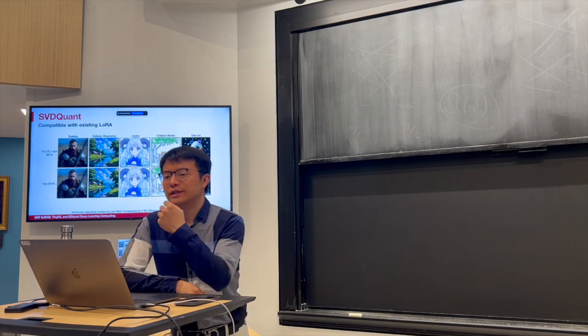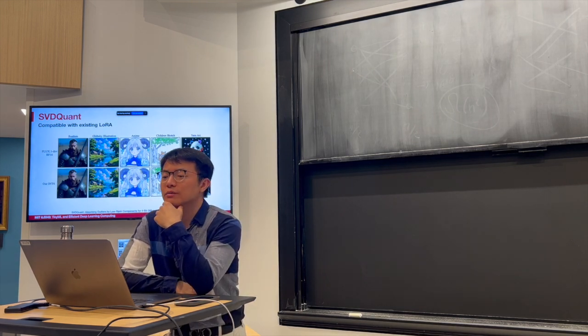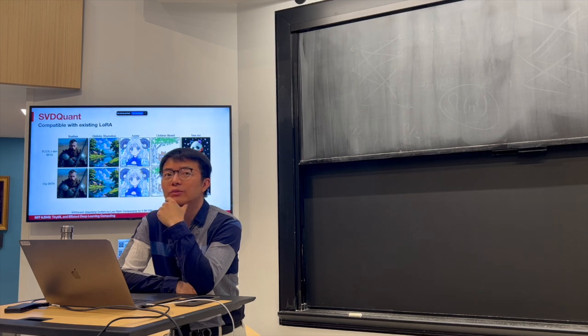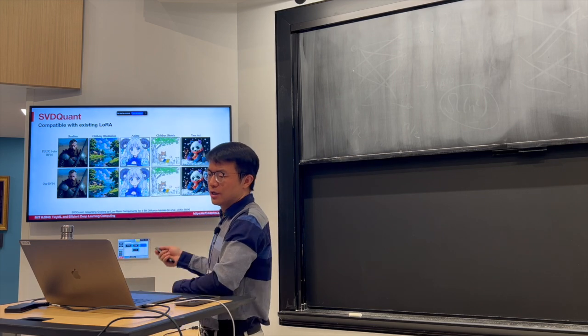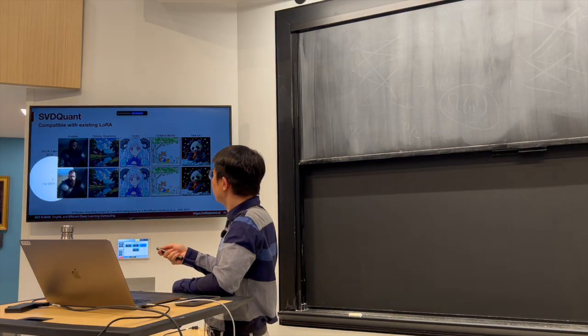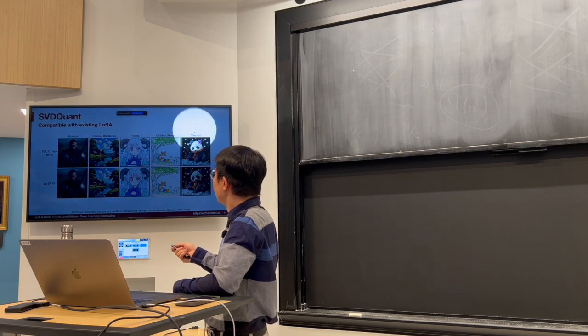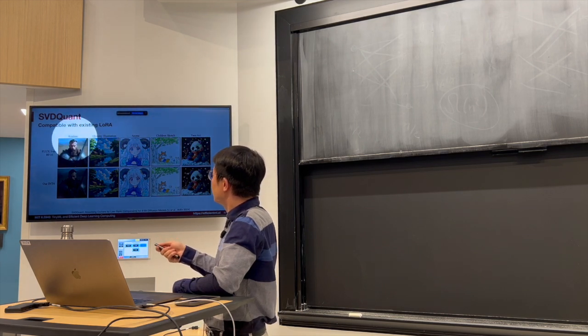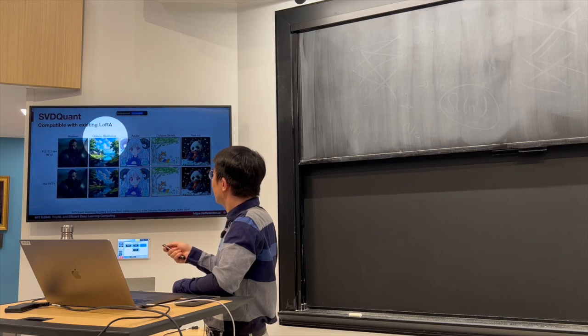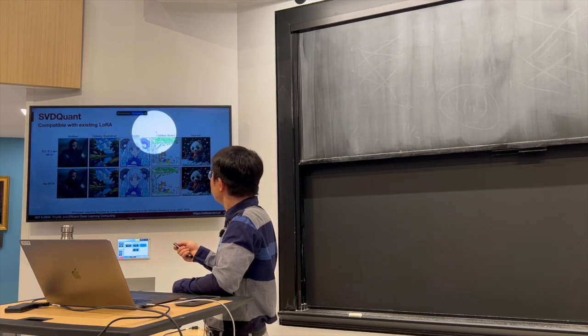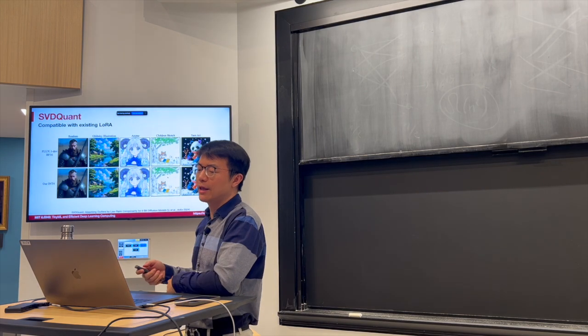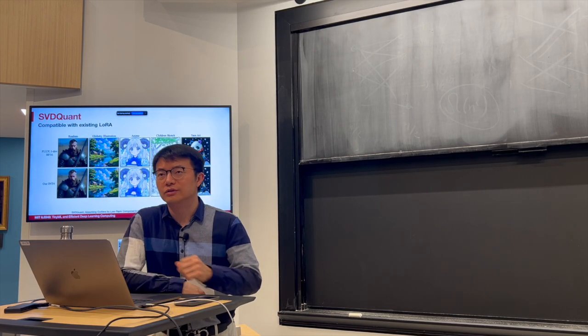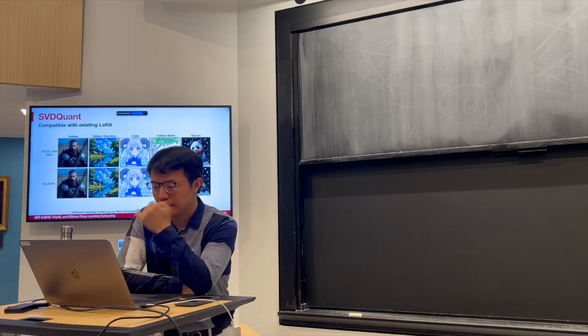And this is showing that SVDQuant is very compatible with existing LoRA. We can just add a LoRA branch without having to do any re-quantization. So this is BF16 and our NF4 version using different LoRA models, like realism, pretty much the same. The anime, children, yarn, different kind of styles, well maintain the fidelity for different LoRA models.